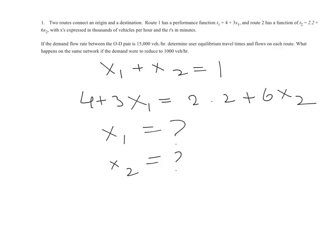Now, the question is, what if, think about it as a question, what happens if the demand was only 100 vehicles per hour? What happens if the demand was only 100 vehicles per hour instead of this 1,000? Now, your first inclination might be to say, x1 plus x2 equal to 0.1, and set up the second equation. 4 plus 3x1 equal to 2.2 plus 6x2.